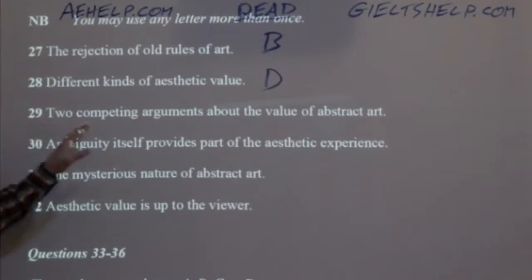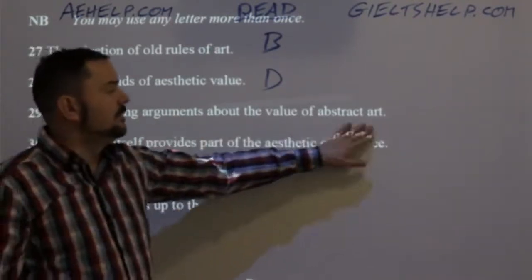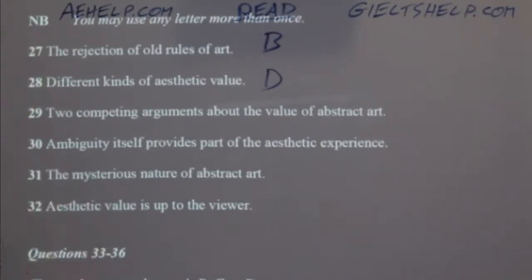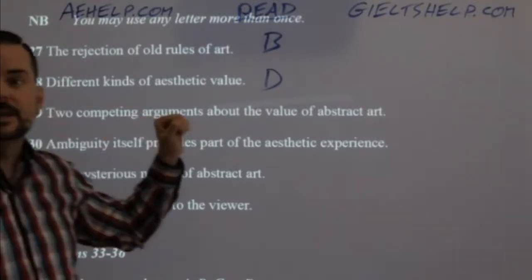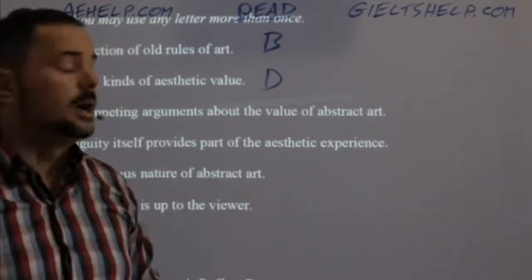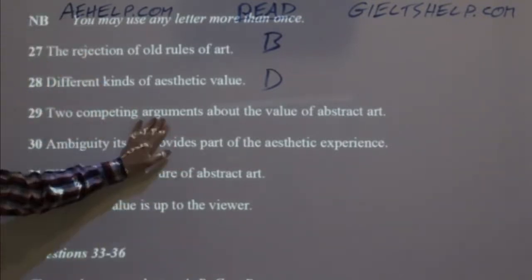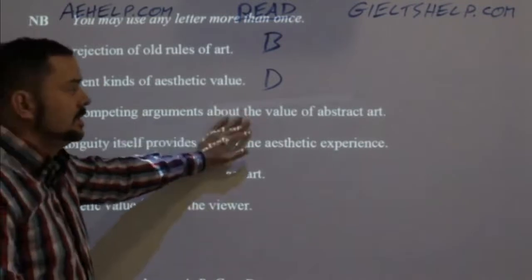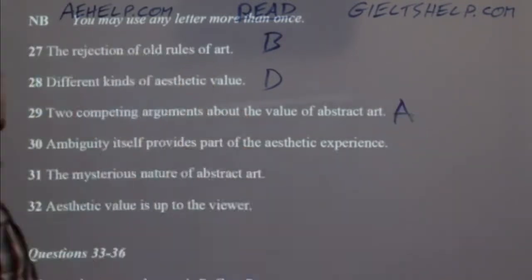Question 29: two competing arguments about the value of abstract art. This one's fairly easy — just by conceptualizing this, we can get it. This is the introduction, right? The introduction says one side says it's not art, the other side says it's perfectly good art — it expresses emotions. So the answer is paragraph A.